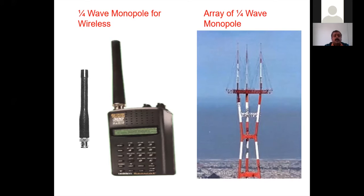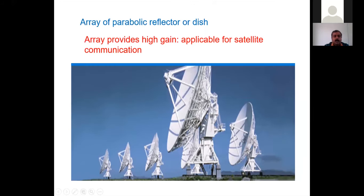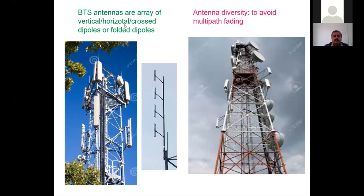This is a quarter-wave monopole antenna. A parabolic dish can enhance gain for satellite earth stations. This is a BTS transmitting antenna that can consist of either vertical, horizontal, or cross dipoles. Nowadays, some printed antennas are also used. In towers, several antennas are placed to avoid multipath fading—this is called antenna diversity.